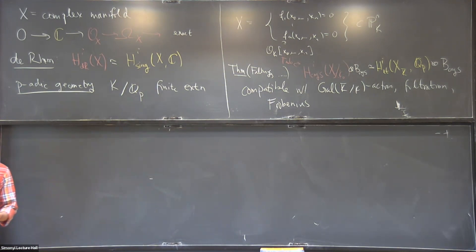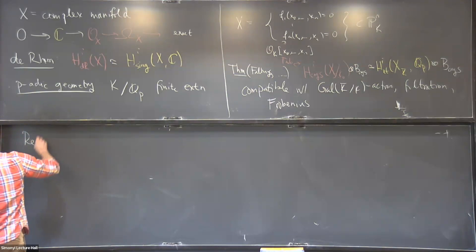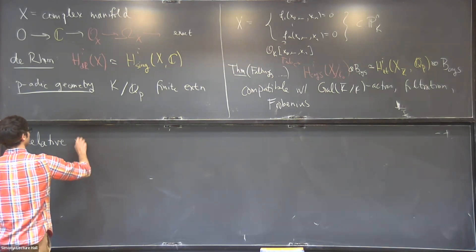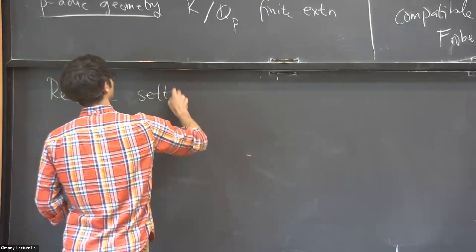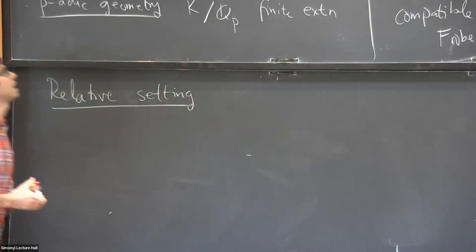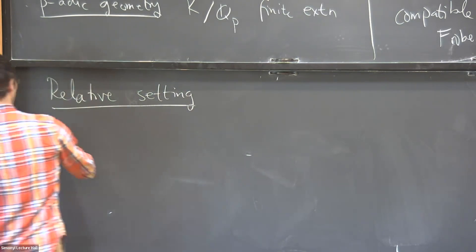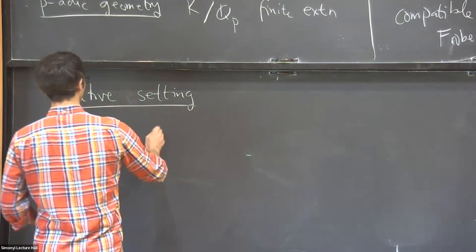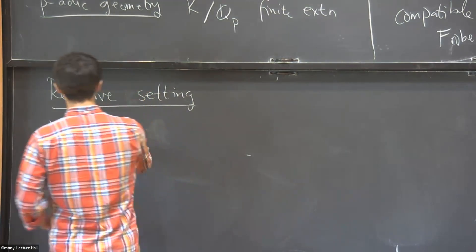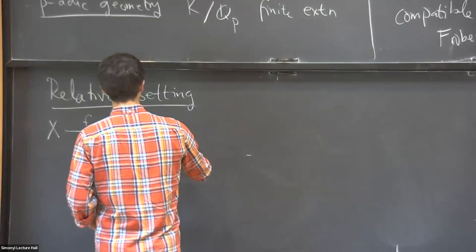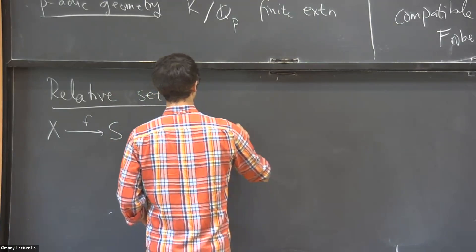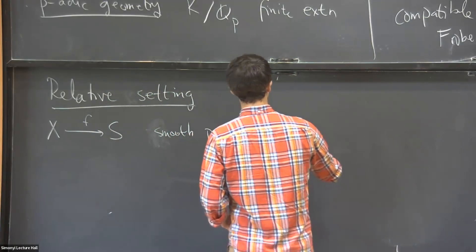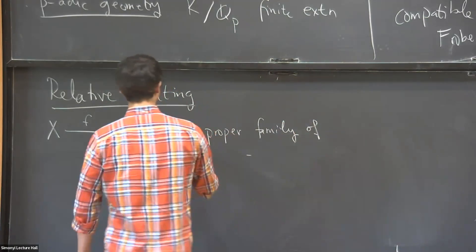And as geometers, we're also sometimes curious about the relative setting. So what happens when we have a family of varieties or a family of complex manifolds? And I actually want to start again by talking about what happens over C. So now I want to look at a family of complex manifolds, which is smooth and proper. So proper is just some compactness assumption. It means that the preimages of compact sets are compact.